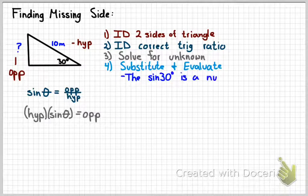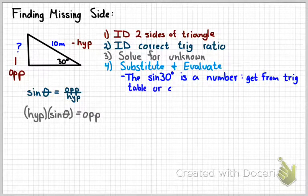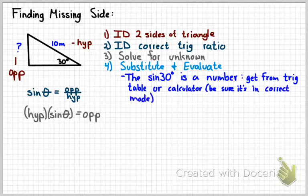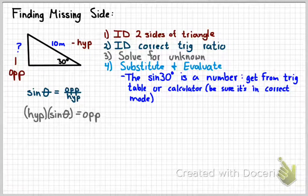The sine of 30 degrees is simply a number. You can get that from one of two places. Either a trig table or a calculator. Now be careful with calculators. Make sure that you're in the correct mode. On a TI calculator, you change that by hitting second and then mode up at the very top of your calculator. Then you'll arrow down and select degrees instead of radians.